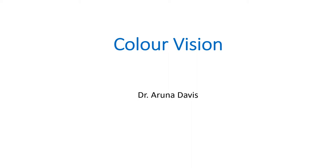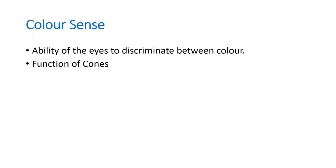In this video we are going to discuss color vision. Color sense is the ability of the eyes to discriminate between different colors. Our eyes are able to see many colors, and this ability is called color sense. It is primarily the function of cones — one of the two types of photoreceptors, rods and cones, where cones are responsible for color sense.